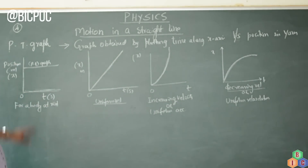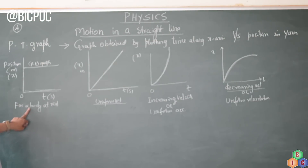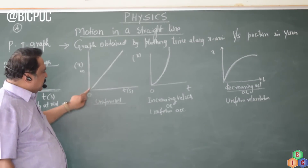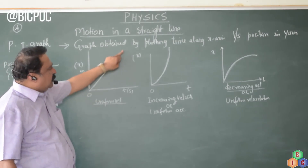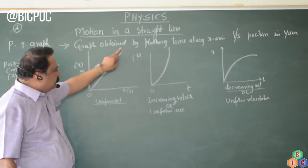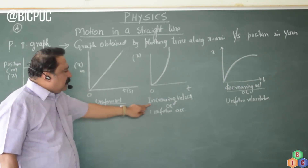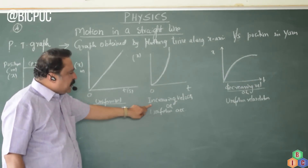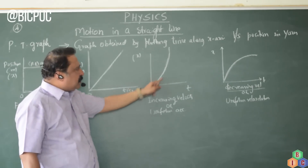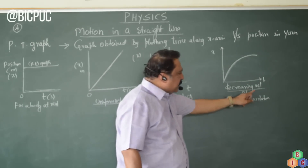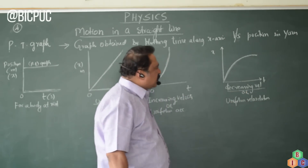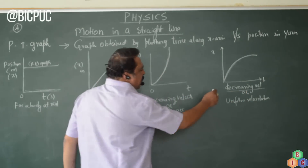So remember the shapes of these four PT graphs, which are very important for the exam. Body at rest: a line parallel to the x-axis. Body with uniform velocity: a linear curve — a straight line as shown in the figure. Body moving with increasing velocity or uniform acceleration is a curve as shown. Body moving with decreasing velocity or uniform retardation is as shown here.